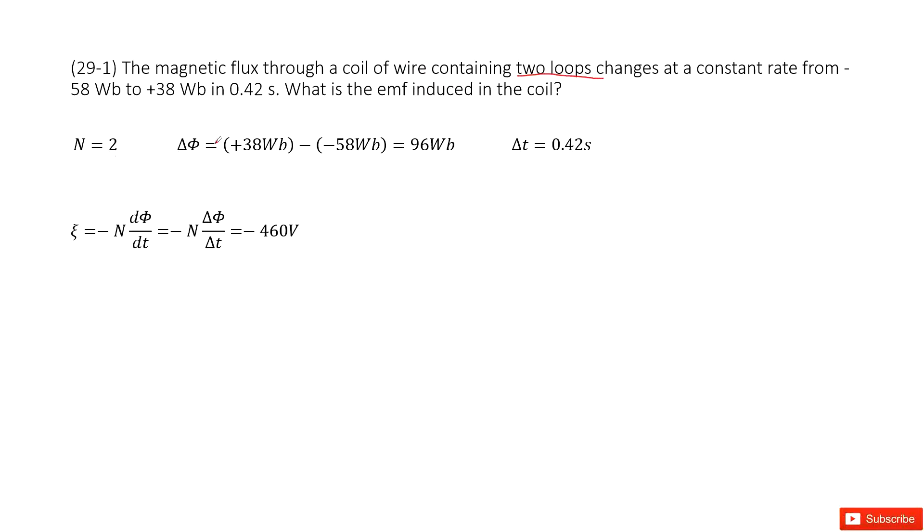So n equals 2. And then you can write the magnetic flux change from the final magnetic flux minus initial magnetic flux. So you get it there. And time taken is 0.42 seconds.